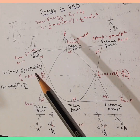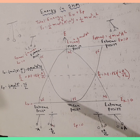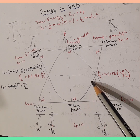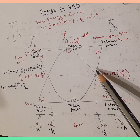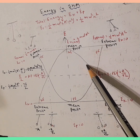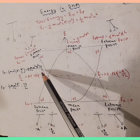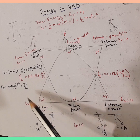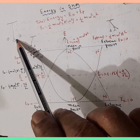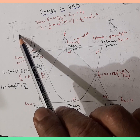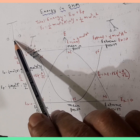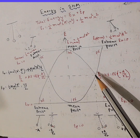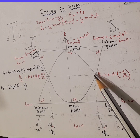This is one of the best examples of how energies are converted from one form to another — total energy remains the same. As the bob moves up toward the extreme, potential energy keeps on increasing whereas kinetic energy keeps on decreasing. At the extreme, all kinetic energy is converted into potential energy. Then moving back, the stored potential energy is converted into kinetic energy, and potential energy goes to zero at the mean position. That's what we see in this graph.